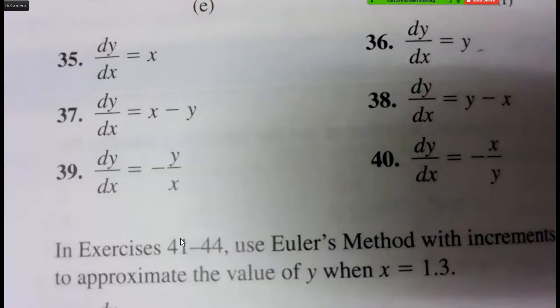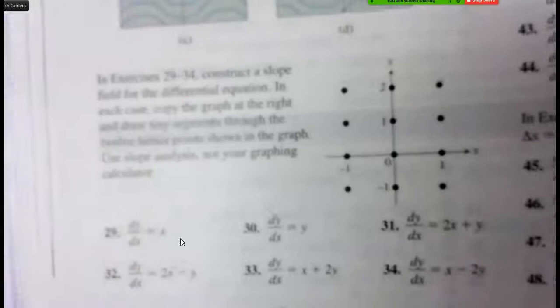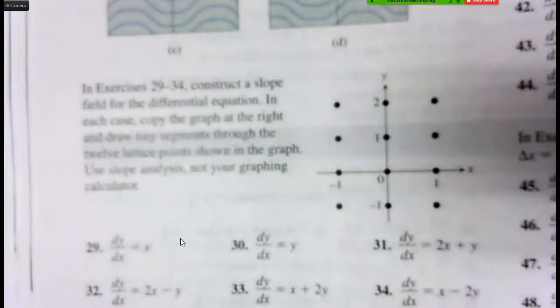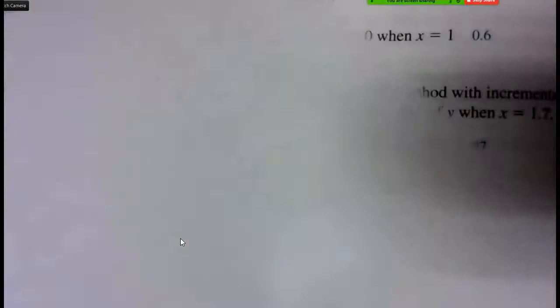How are we with sketching slope fields, like what you had to do for 29, 31, and 33? Are we confident sketching slope fields? Okay. Do you want to see 31? Do you want to see it drawn from the beginning? Okay.